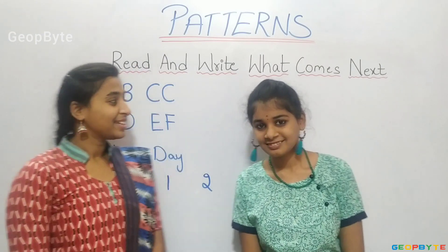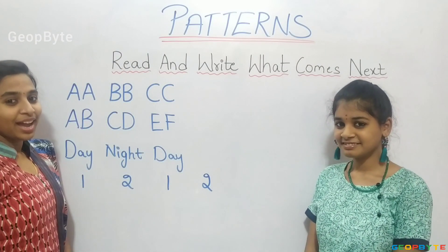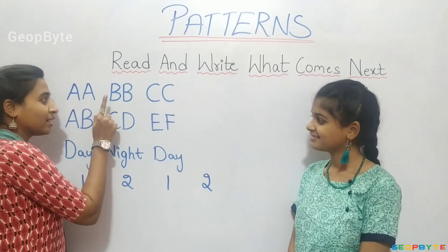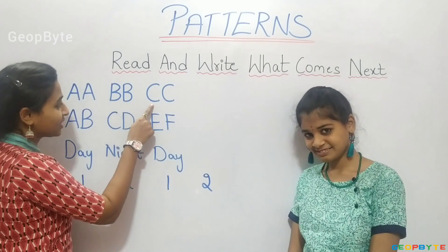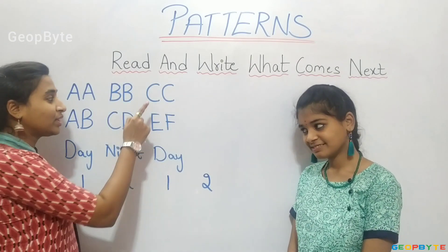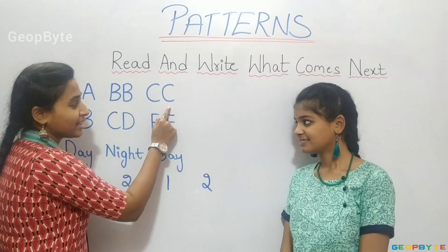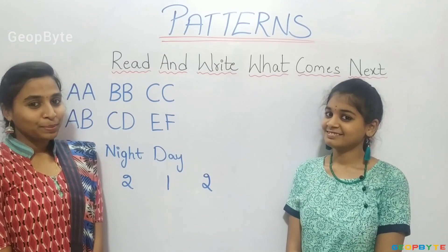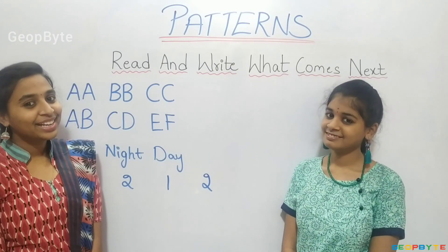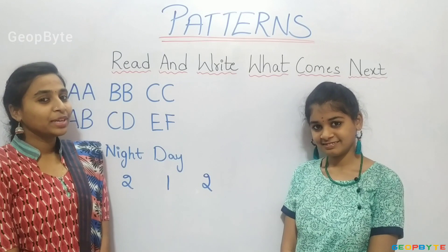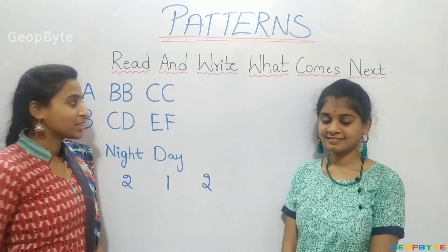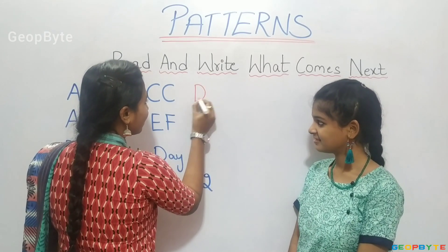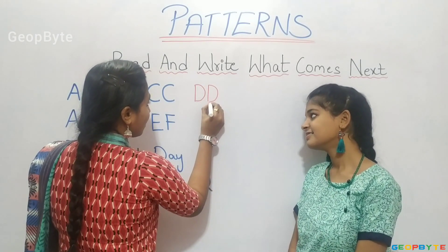Hey kids, see here. I have A, A, B, B, B, C, C. After C, C, C, what comes? Let us see. A, B, C, D — after the alphabet C, the alphabet D comes. So let us write D, D.